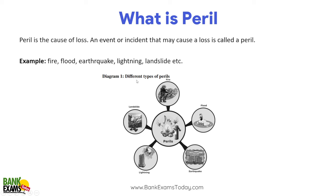What is peril? Peril is the cause of loss. Different kinds of perils can be there — fire, landslides, floods, lightning, earthquakes. Any incident from which loss can occur, that is known as peril. So that is the definition of peril. Please remember that.